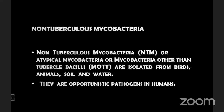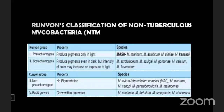Non-tuberculous mycobacteria (NTM), also known as atypical mycobacteria or mycobacteria other than tubercle bacilli, are isolated mainly from birds, animals, soil, and water. They are opportunistic pathogens in humans. Runyon's classification divides NTM into: Group I — photochromogens (produce pigment only in light); Group II — scotochromogens (produce pigment even in dark, intensity increases on light exposure); Group III — non-photochromogens (no pigmentation); and Group IV — rapid growers (grow within one week).